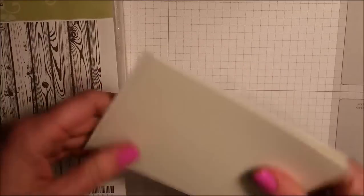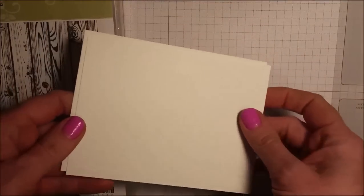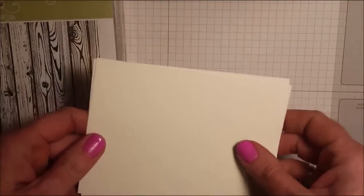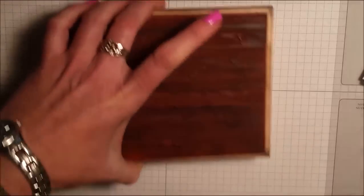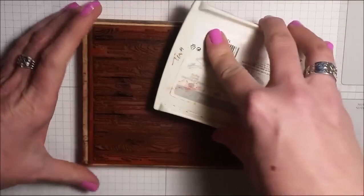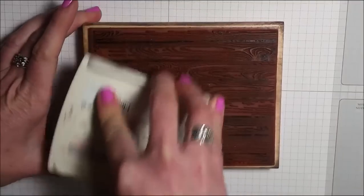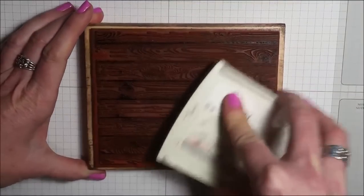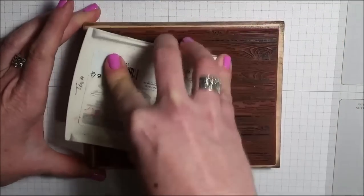What you need are two pieces of whisper white and these both measure five and a quarter by four, and I'm going to ink up my background stamp. Now you can use any background stamp as long as when you stamp it on your two pieces they line up.